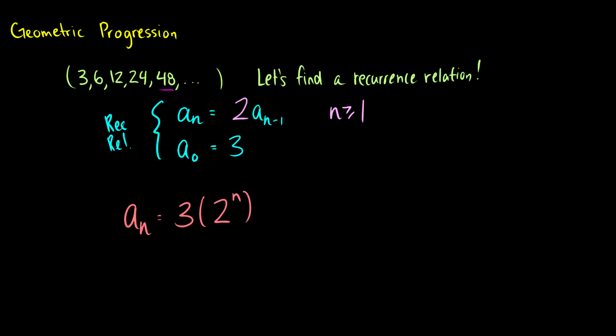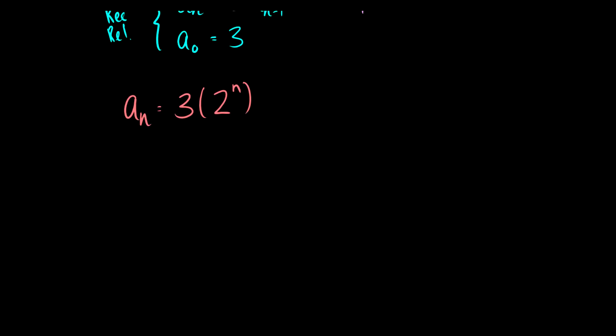a to the 1 is equal to 3 times 2 to the 1. 3 times 2 is 6, that looks good. a of 2 is 3 times 2 to the 2. So 3 times 4 is equal to 12. That seems pretty good. So here's how geometric progression solutions work.